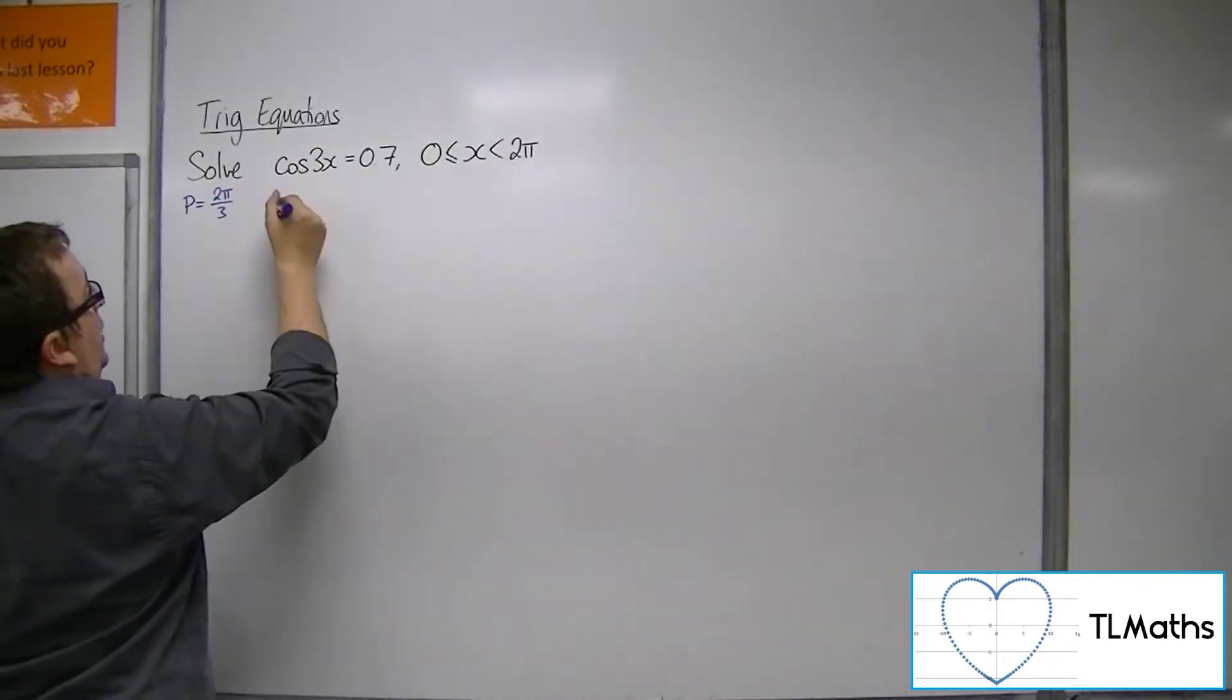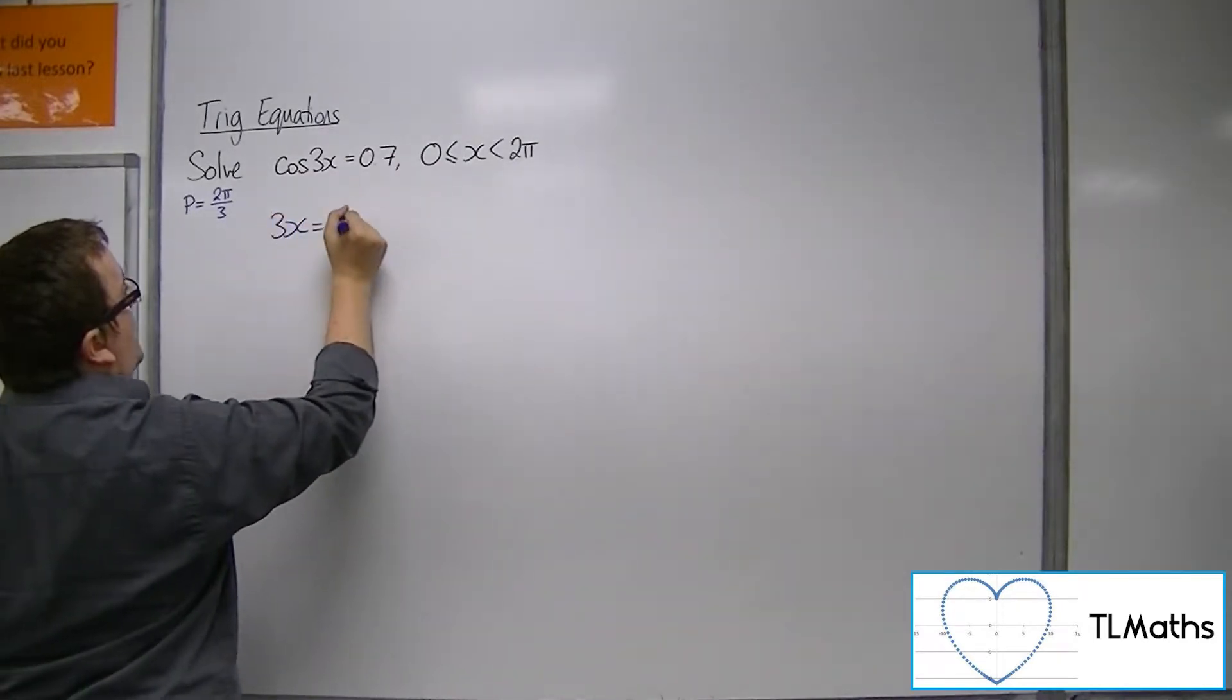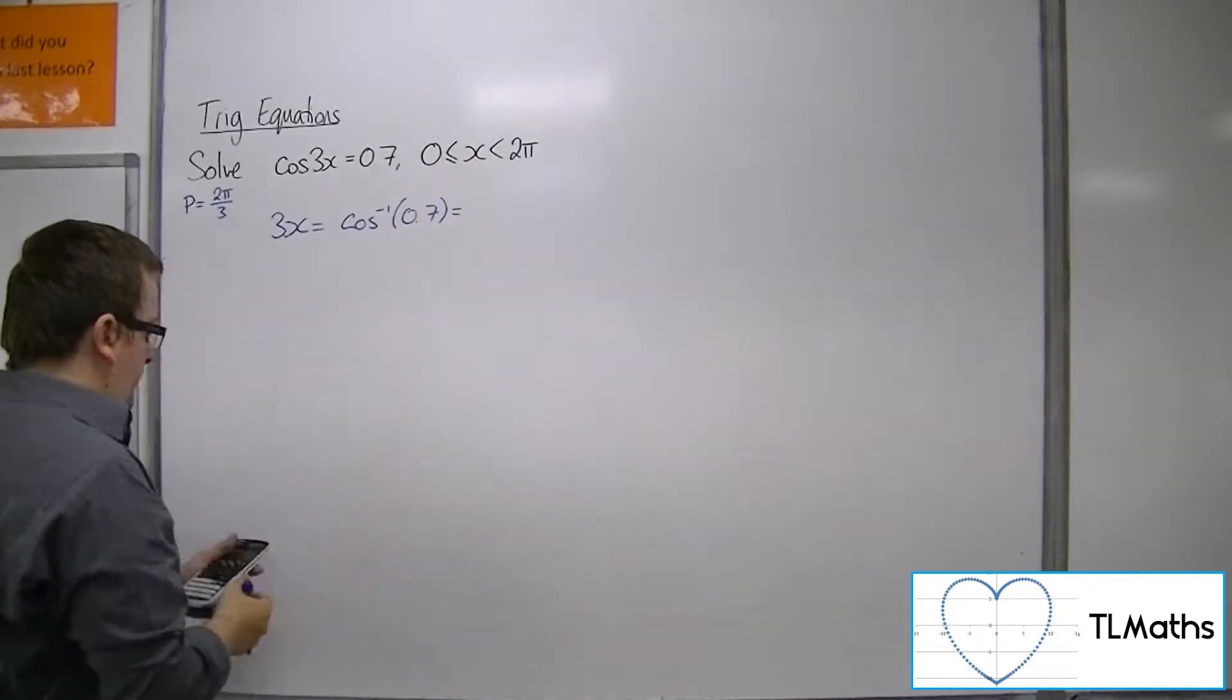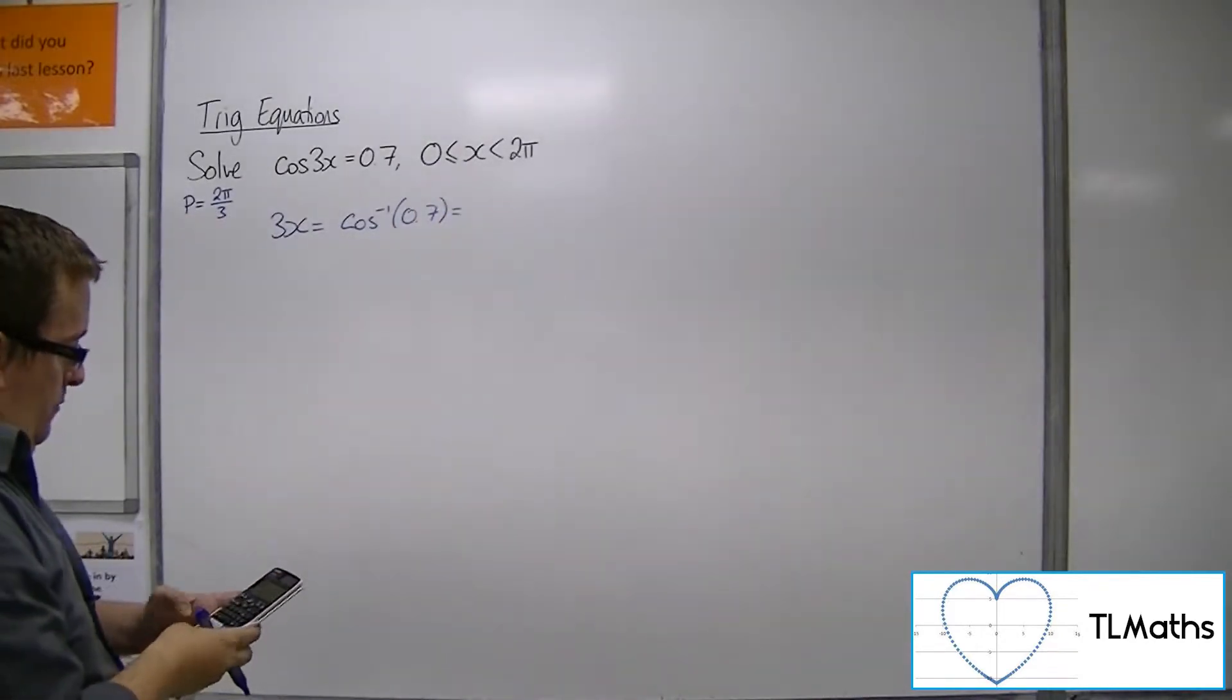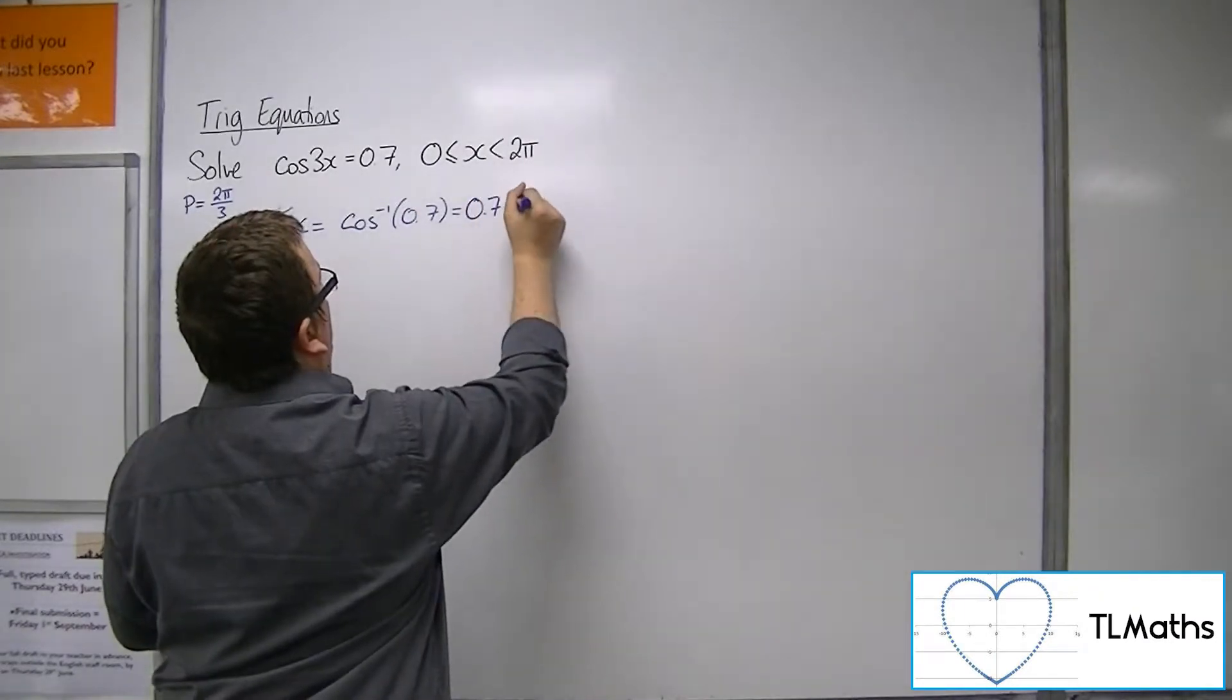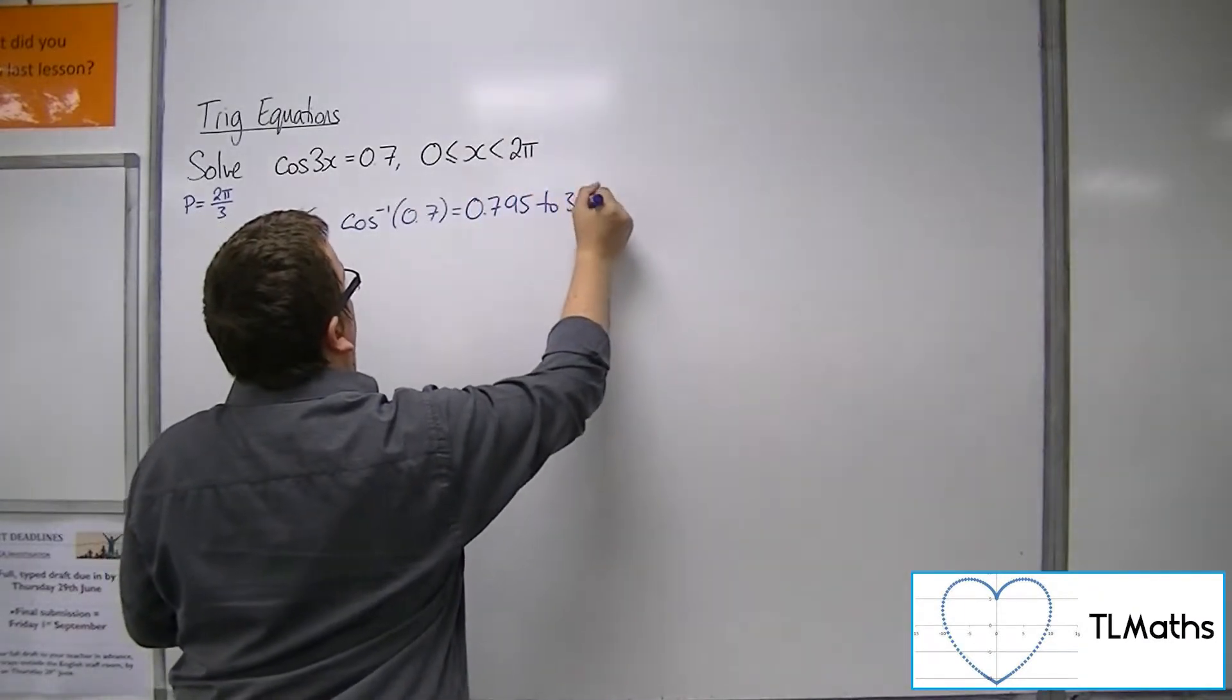If we take inverse cosine of both sides, we get 3x = cos^(-1)(0.7). So cos^(-1)(0.7) = 0.795 to 3 significant figures.